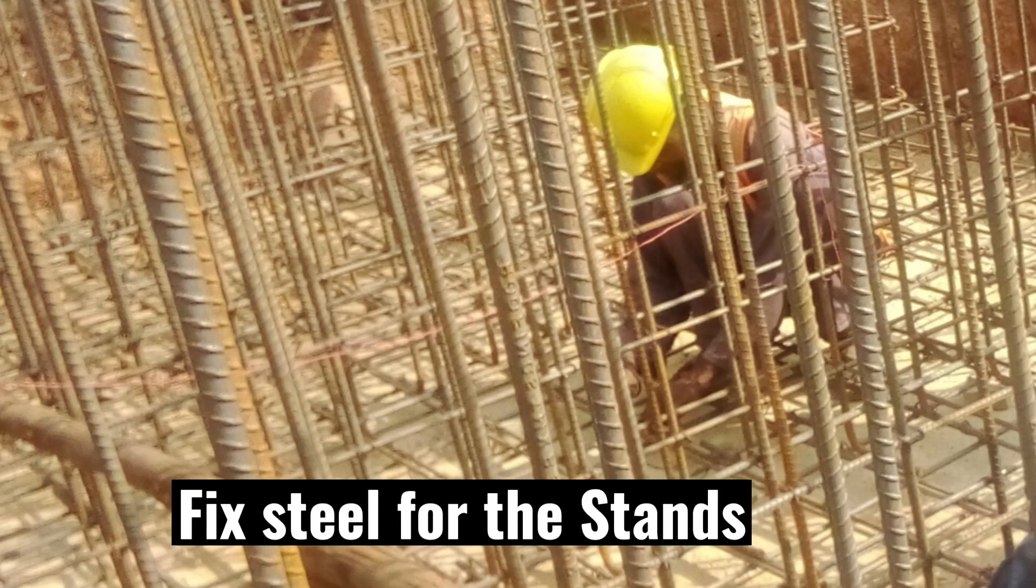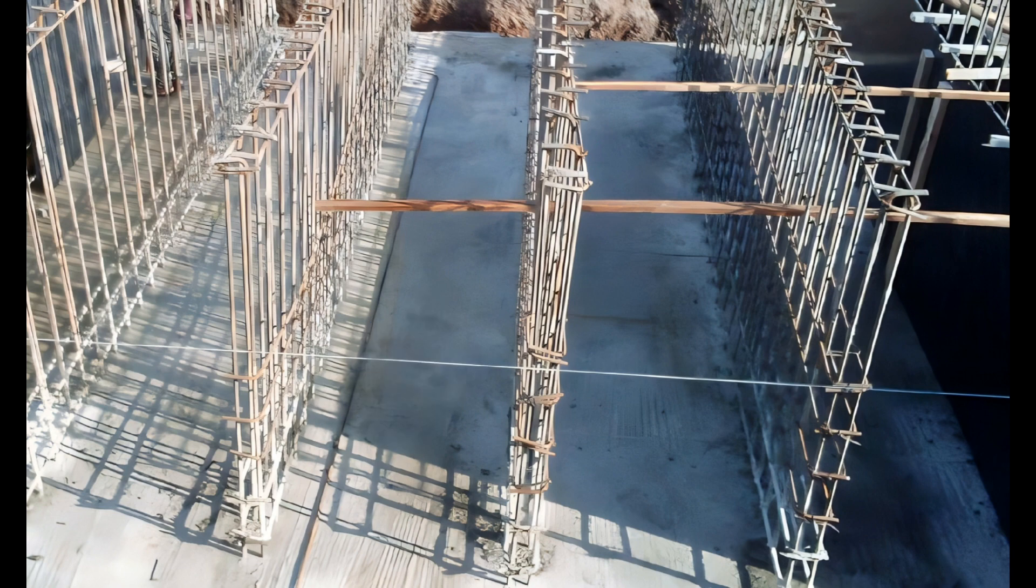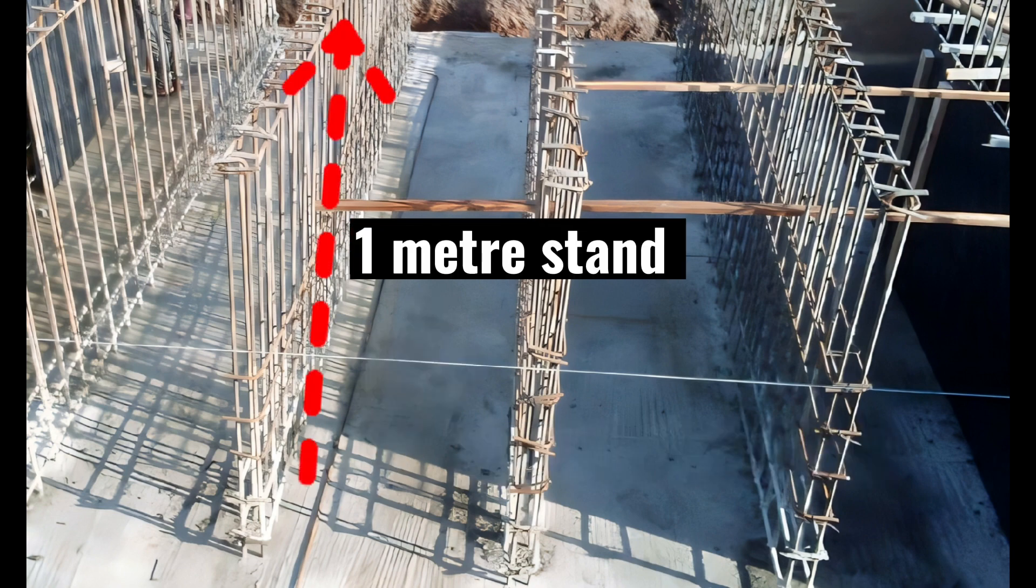Fix steel for the stands and for our case here, we consider the total concrete stand height as 1.6 meters. 600mm for the base below the ground and 1 meter to be above the ground. The stand should be at least 300mm thick.